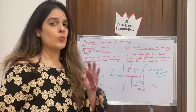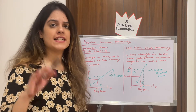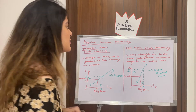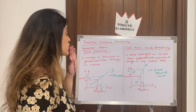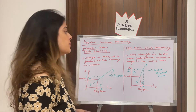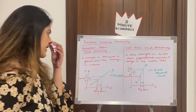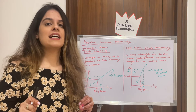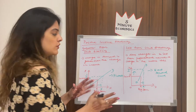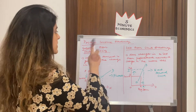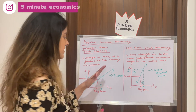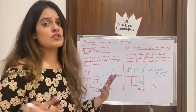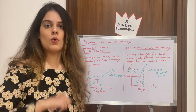Moving to the third type: positive income elasticity, which has three sub-types — greater than unitary, less than unitary, and unitary. In positive income elasticity, there is a direct relationship, so the curve slopes upward like a supply curve. When change in demand is greater than the change in income — income rises a little but quantity demanded rises by a lot — we get a flatter demand curve.